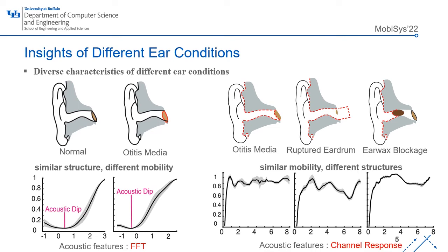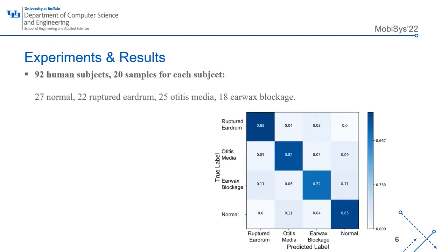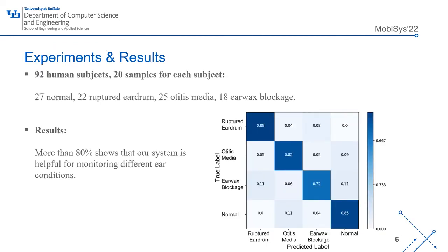Channel response is widely used to differentiate ear canal structure. This figure shows channel response features are different. In our experiment, we recruited 92 human subjects. The results show that our system is helpful for monitoring different ear conditions.